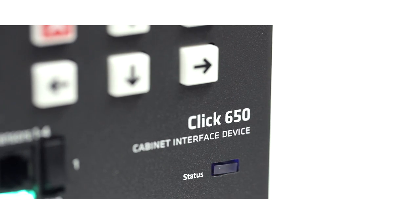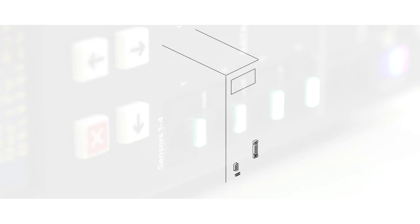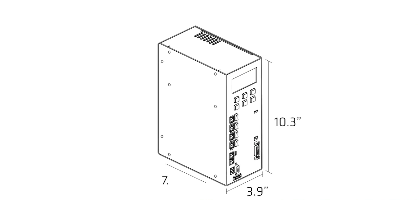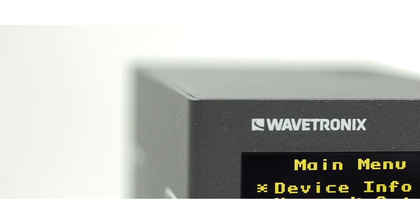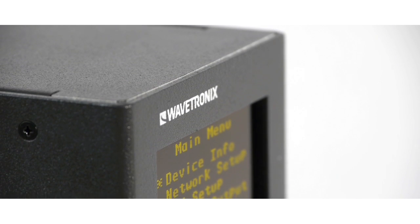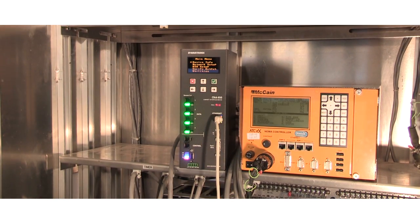Click 650 solves this problem by providing the advanced technology needed for even the most complicated applications, with a drastically reduced footprint. Click 650 packs a powerful punch with the capability of collecting up to 64 channels of data, effectively replacing between 16 and 32 rack cards. This accommodates the most advanced applications, but uses far less cabinet space.